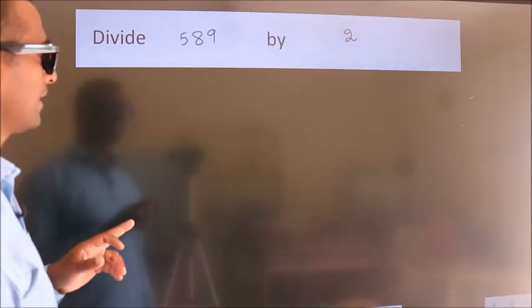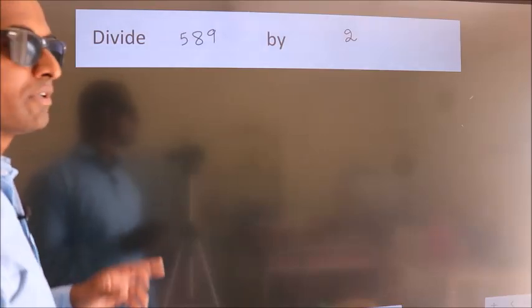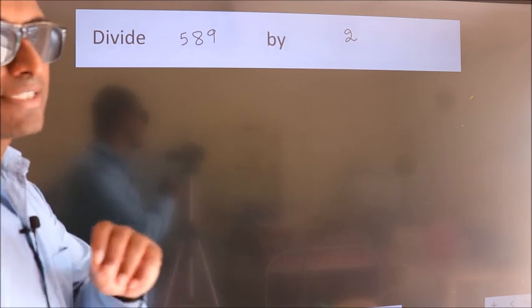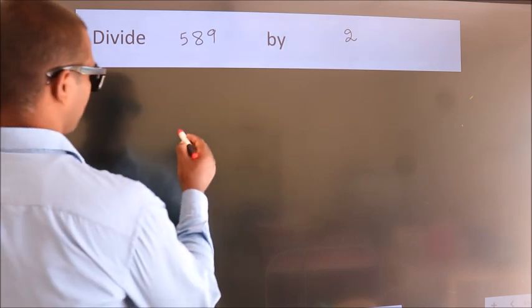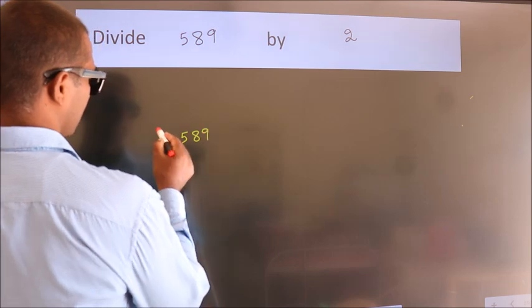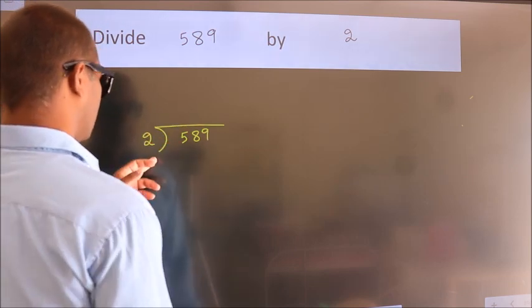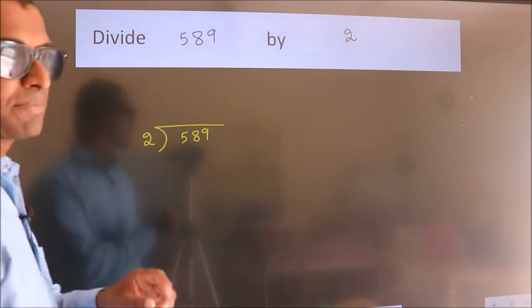Divide 589 by 2. To do this division, we should frame it in this way: 589 here, 2 here. This is your step 1.